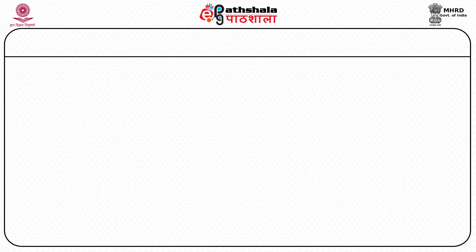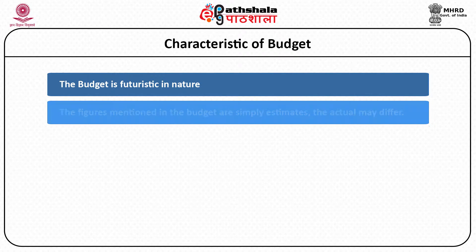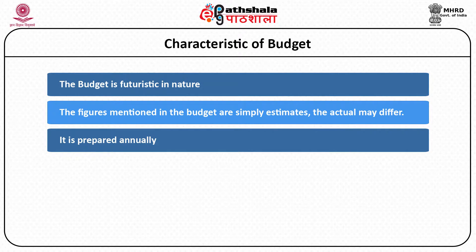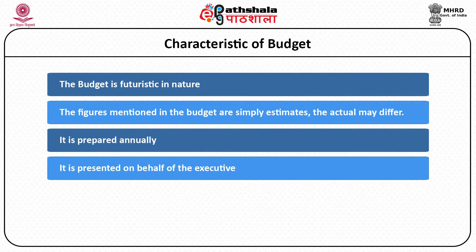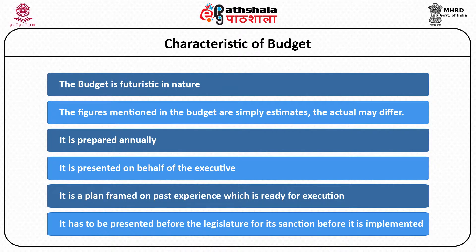On the basis of this and other definitions, certain characteristics of budget can be discerned. First of all, budget is always futuristic in nature, that is, it is made for the coming financial year. Then, the figures mentioned in the budget are simply estimates; the actual may differ from them. It is prepared annually, on behalf of the chief executive. It is a plan framed on the past experience which is ready for execution, and it has to be presented before the legislature for its sanction before it is actually implemented.